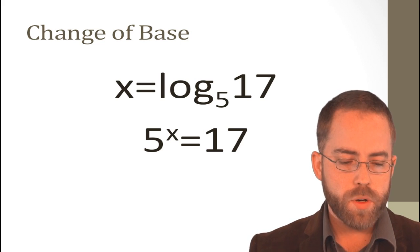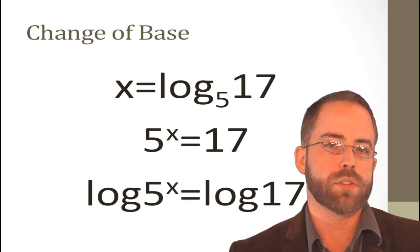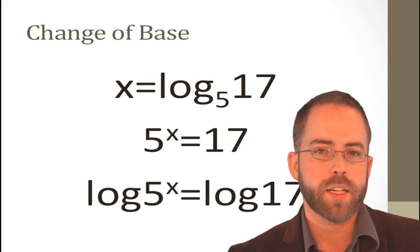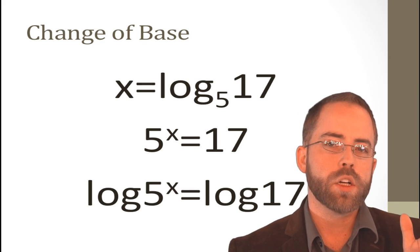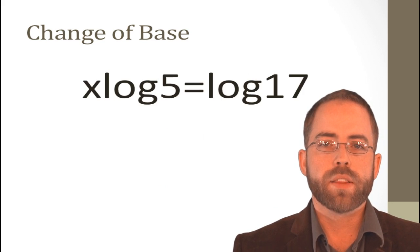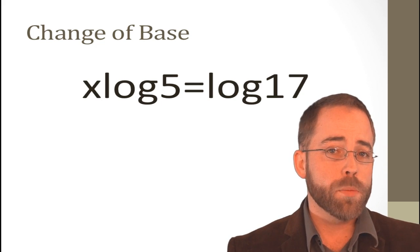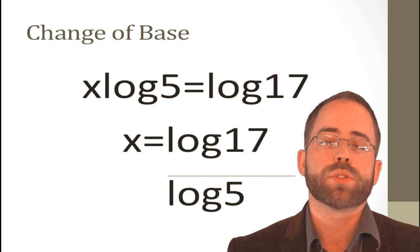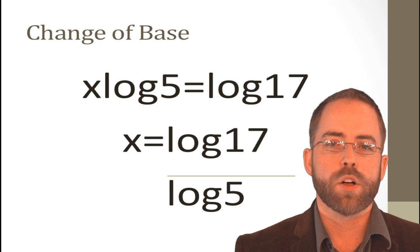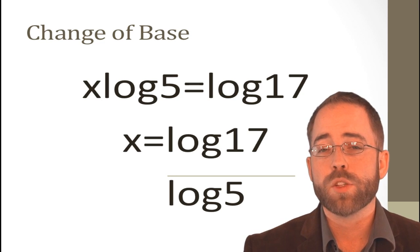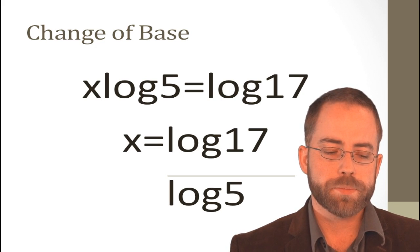But now, if we take the log of both sides, we start to see the usefulness of these log properties that we learned in the last section. If you look at that first expression, I've got an exponent on my log which I can then pull out front. That log 5 to the x is the same as x log 5. Now, I've almost got x alone. I just need to divide both sides by log 5 and you've got x by itself. You have solved for x in a way that you can immediately put into your calculator, even a dumb calculator that's not too fancy.